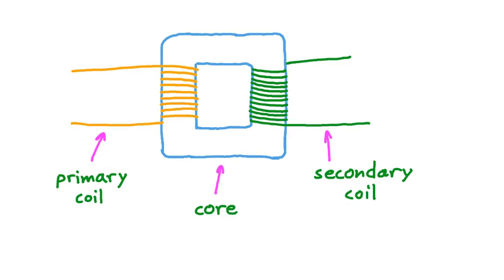Here's how the transformation process works. First, current flows in through the primary coil — we'll call this current I sub P to show that it's in the primary coil. This current travels around every single one of the loops of the primary coil, wrapped around the core, and then finally comes back out the other side. If this was all that happened in a transformer, it wouldn't really accomplish much. But at this point, we can recall that a loop of wire, when it carries a current, generates a magnetic field.